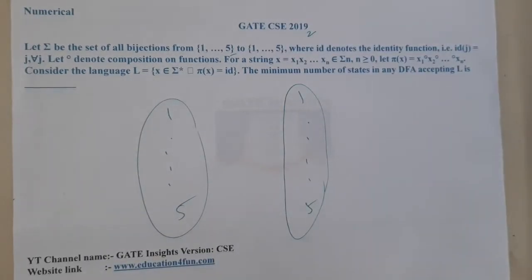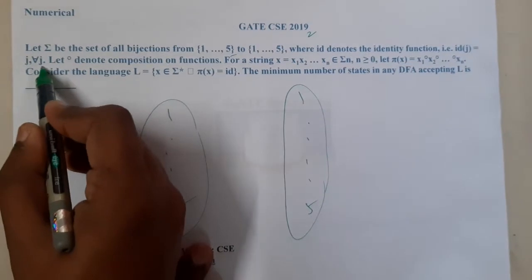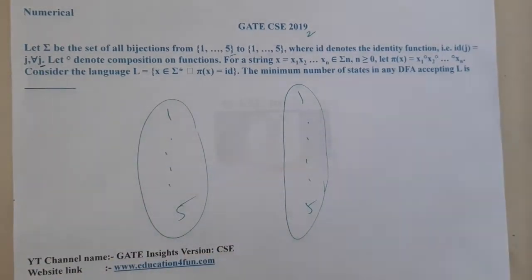Where id denotes the identity function, id(j) equals j for all values of j. Let zero... just give me a second, is that a printing mistake?